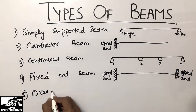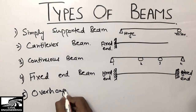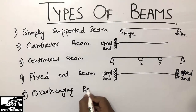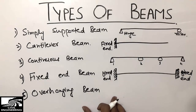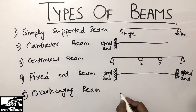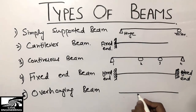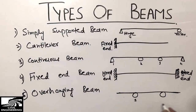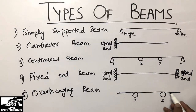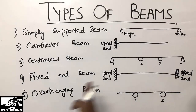The fifth and last type is the overhanging beam. It is the type of beam which is supported by two supports but is hanging at both ends. One is a roller support and the second is also a roller support, but it is hanging at this end and also at this end. So we call this type of beam the overhanging beam.